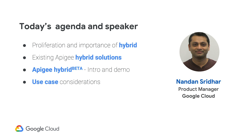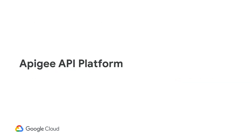Thank you so much, Shikha. Let me give you a quick overview of today's agenda. I'll briefly talk about the Apigee API platform and the capabilities available, then talk about the hybrid use cases we've seen with customers and what we have in our current offering. Then we'll talk about the new offering and how it differs from the current hybrid offering, and some guidance on when to use which type of gateway.